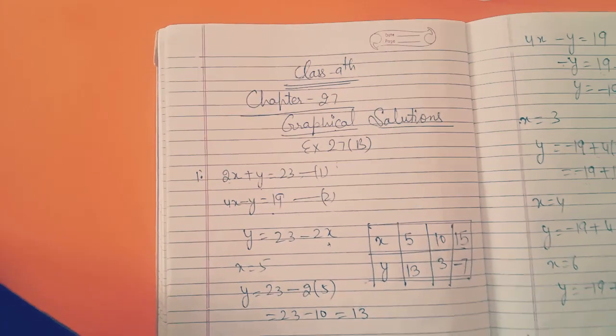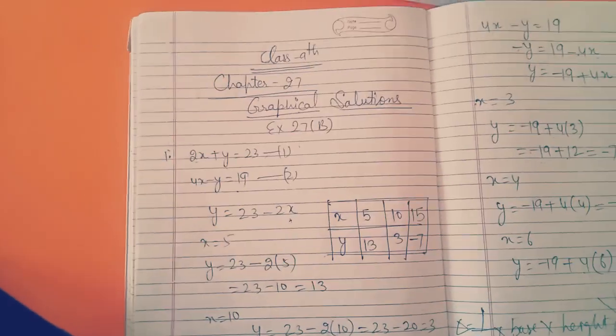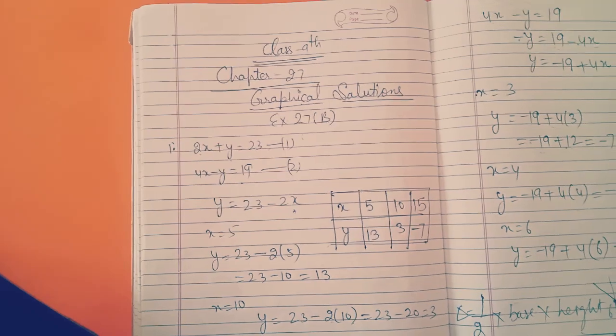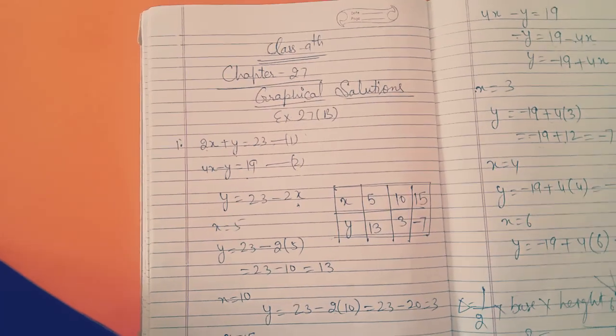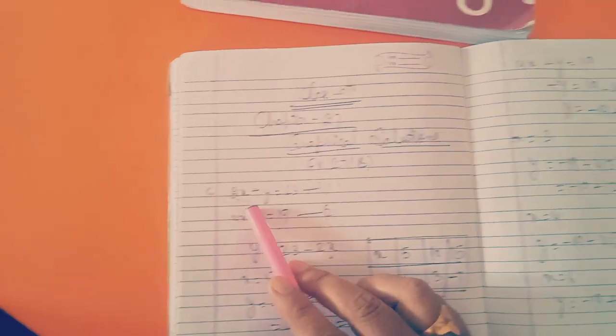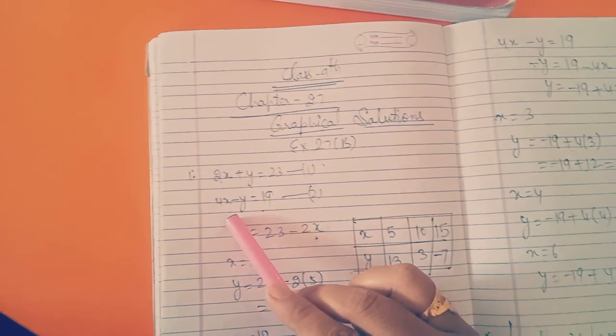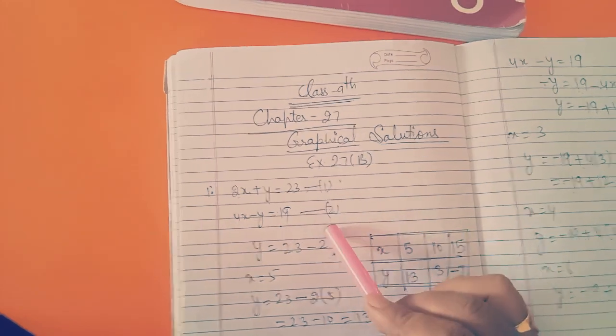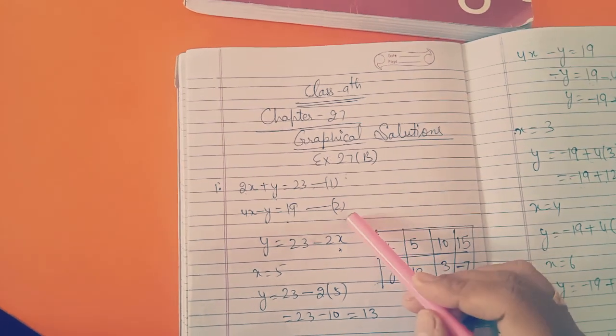In this exercise, they will ask for the solution of two linear equations by graphical method. Students, this question will also come in your final examination. How we will find the solution from graphical method? First of all here, two equations are given: 2x plus y is equal to 23 and another equation is 4x minus y is equal to 19. You have to draw the graph for these two equations.